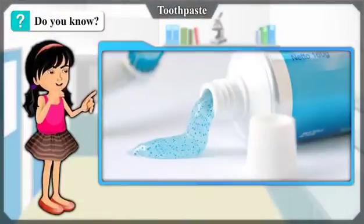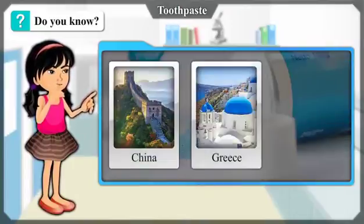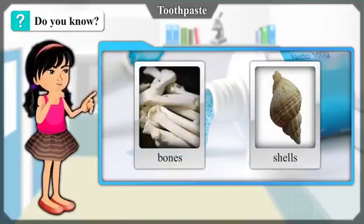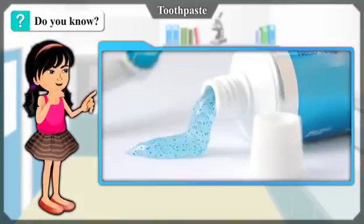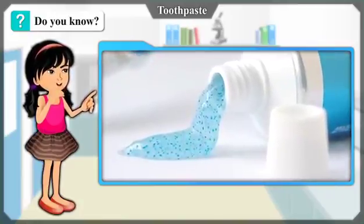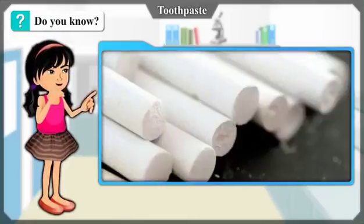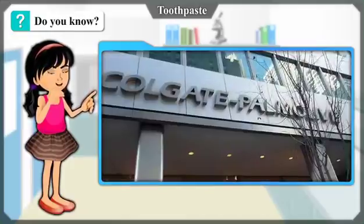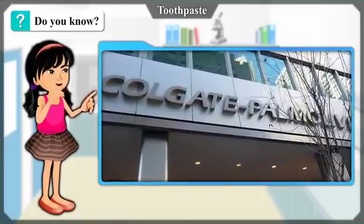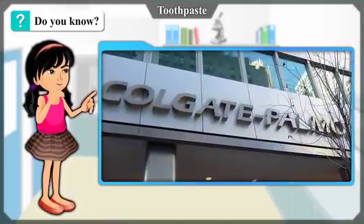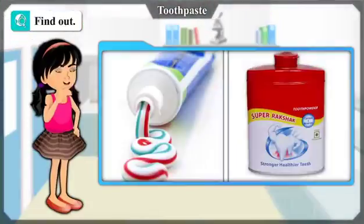Do you know? In the period prior to 500 BC, in countries such as China, Greece, and Rome, toothpaste was made by mixing the powder of bones and shells. Toothpaste of which soap was an ingredient came into use in the 19th century. Later, toothpaste was made using a chalk-like material. The first commercial toothpaste was made by the Colgate Company in New York City in 1873.